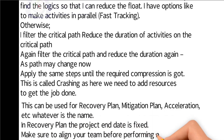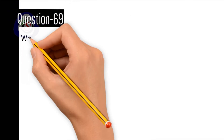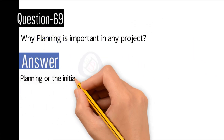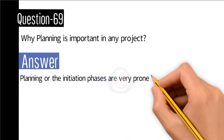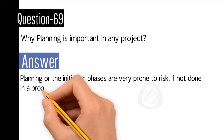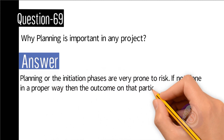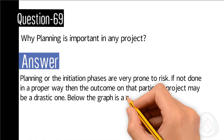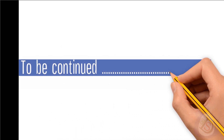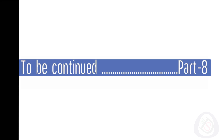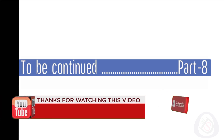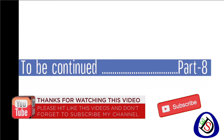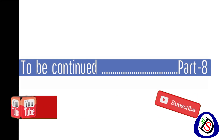Question number 69: Why is planning important in any project? Answer: The planning and initiation phases are very prone to risk. If not done properly, the outcome of a project may be a disastrous one — as illustrated by the graph shown. Thanks for watching Software Engineering Academy. We will meet in the next session, part number — you can see below. Thanks for watching and we will meet in the next video.